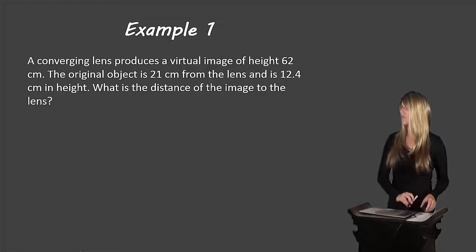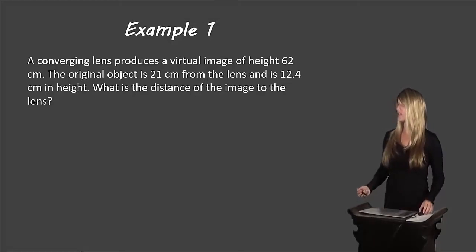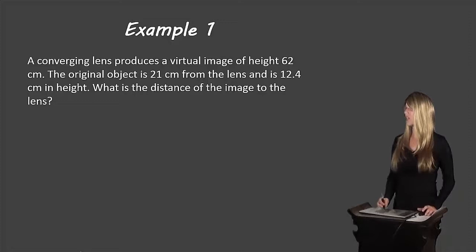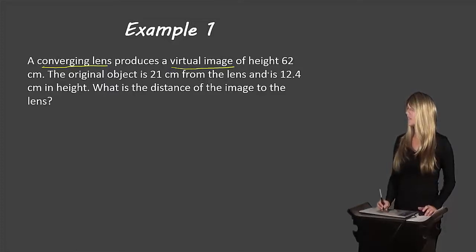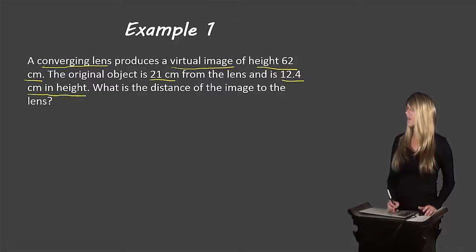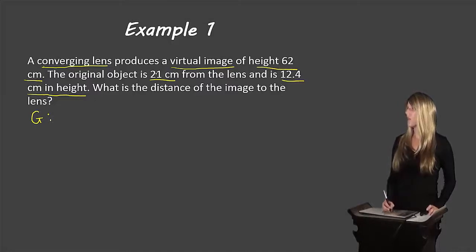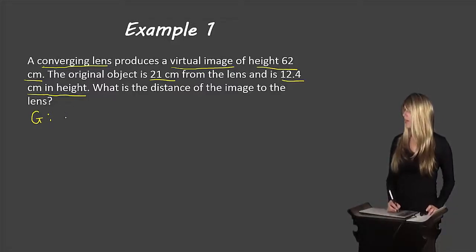Let's look at an example. A converging lens produces a virtual image of height 62 centimetres. The original object is 21 centimetres from the lens and is 12.4 centimetres in height. What is the distance of the image to the lens? Let's find all the information. We have a converging lens producing a virtual image with HI of 62 centimetres.